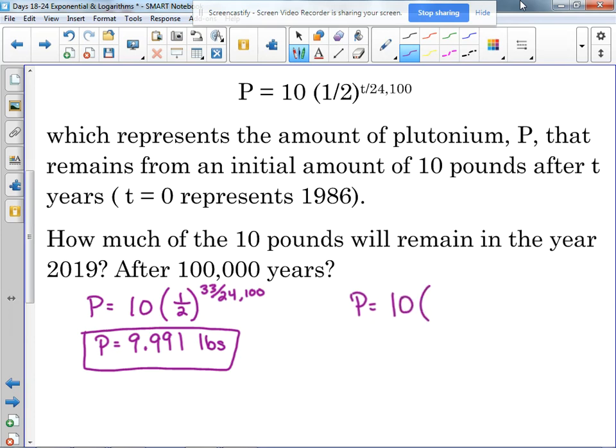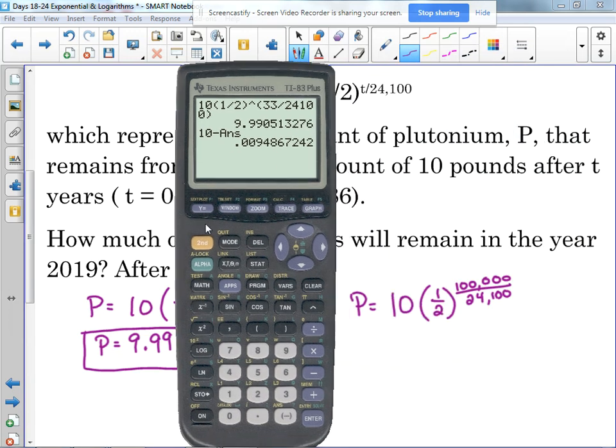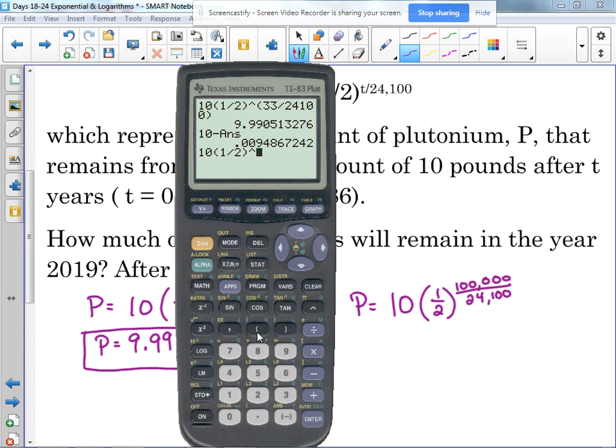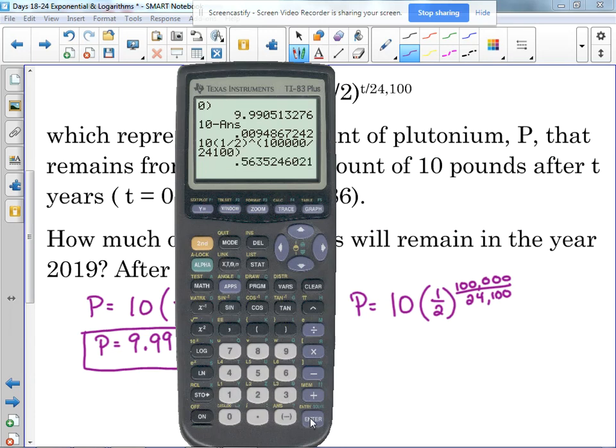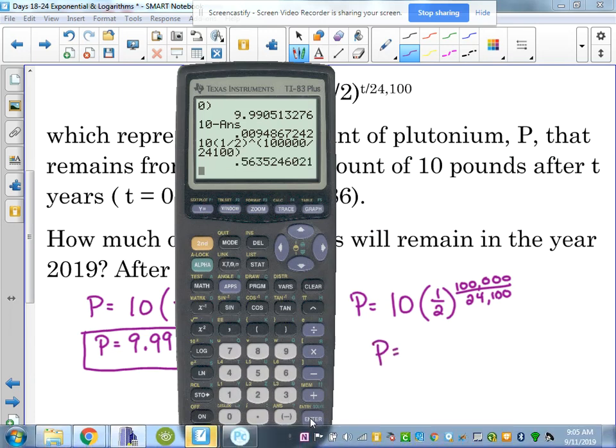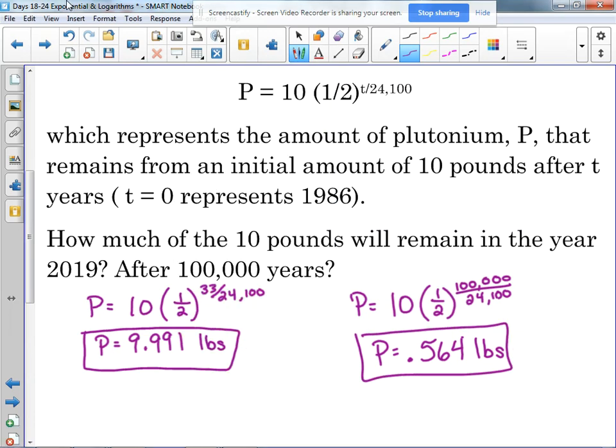How about after 100,000 years? So really, really long time. Plugging in 100,000. Let's see here. 10 times one-half to the 100,000 divided by 24. So after 100,000, still not gone, though, but not much of it's remaining. About half a pound of this plutonium is remaining in that area after 100,000 years.